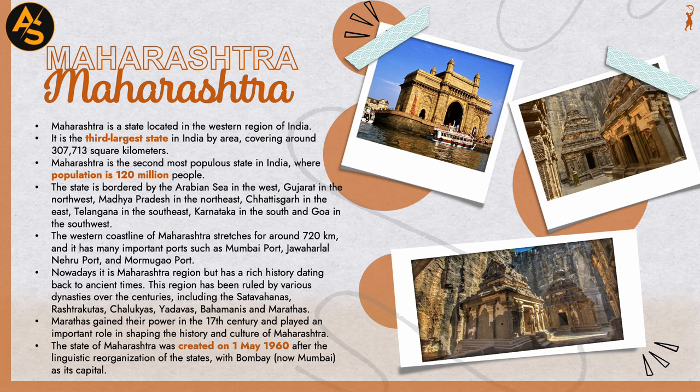The state is bordered by the Arabian Sea in the west, Gujarat in the northwest, Madhya Pradesh in the northeast, Chhattisgarh in the east, Telangana in the southeast, Karnataka in the south, and Goa in the southwest. The western coastline of Maharashtra stretches for around 720 kilometers and has many important ports such as Mumbai Port and Jawaharlal Nehru Port.